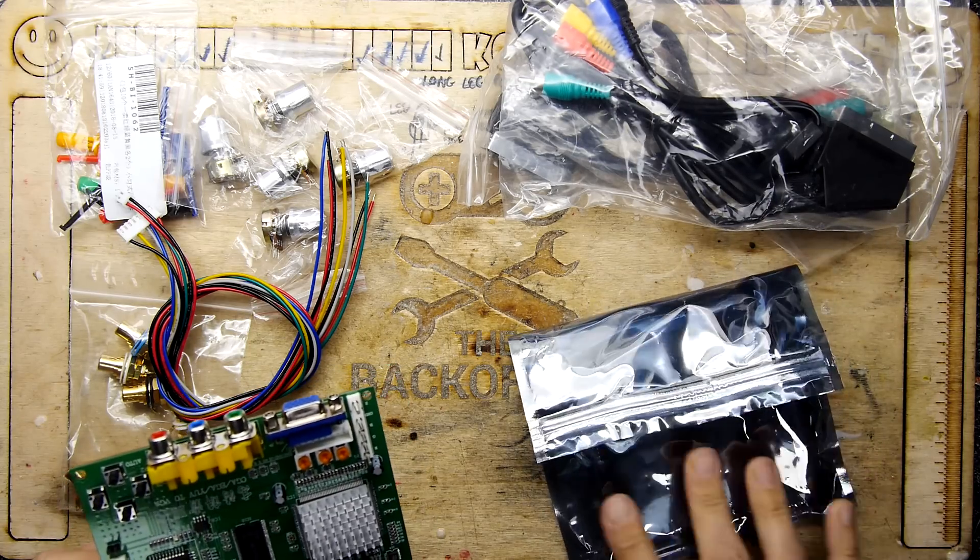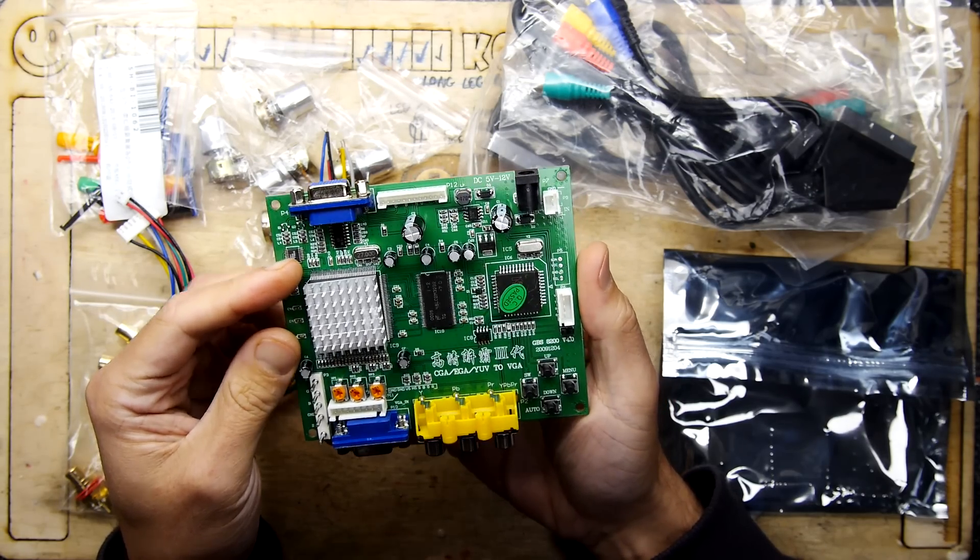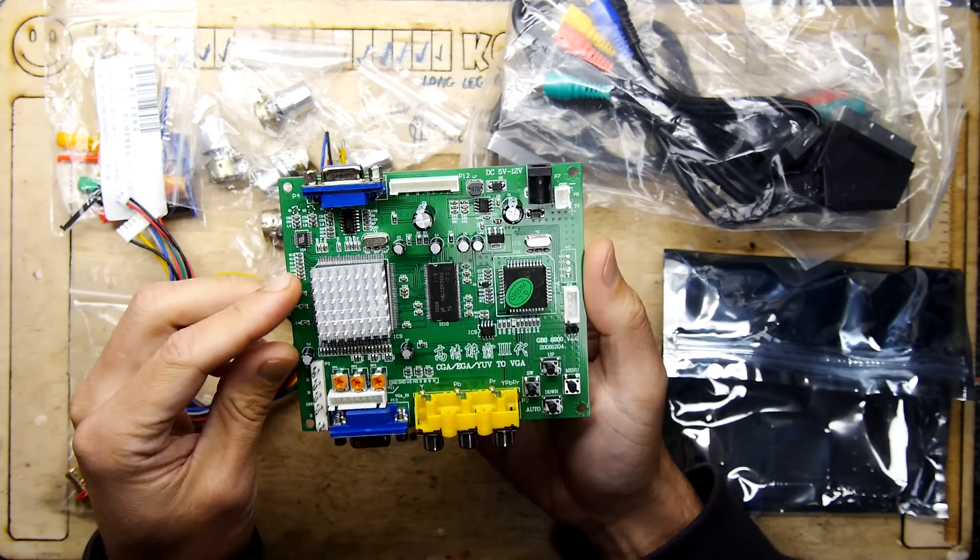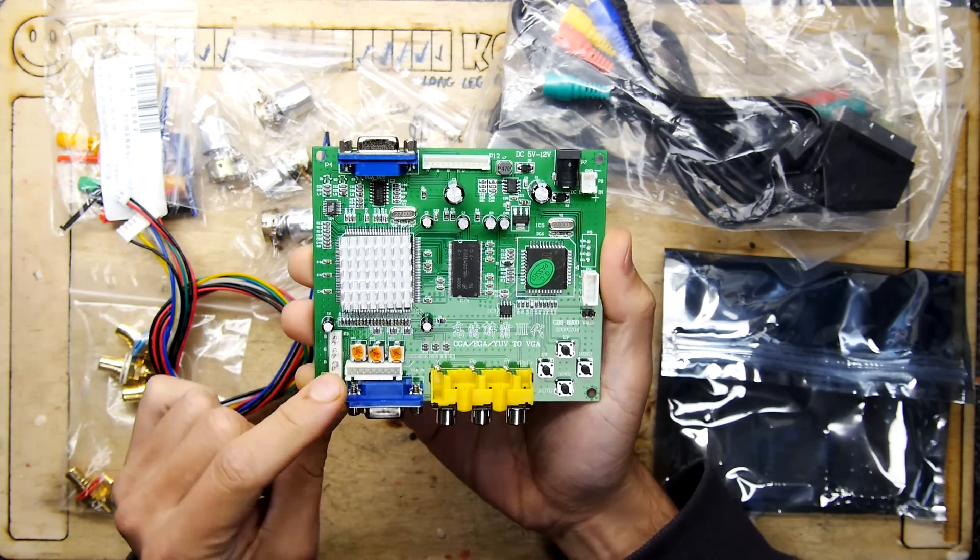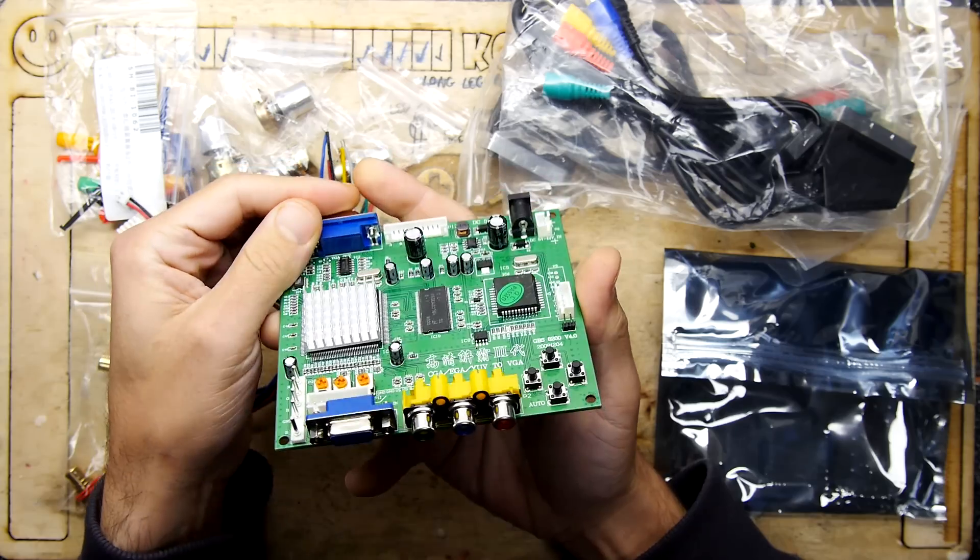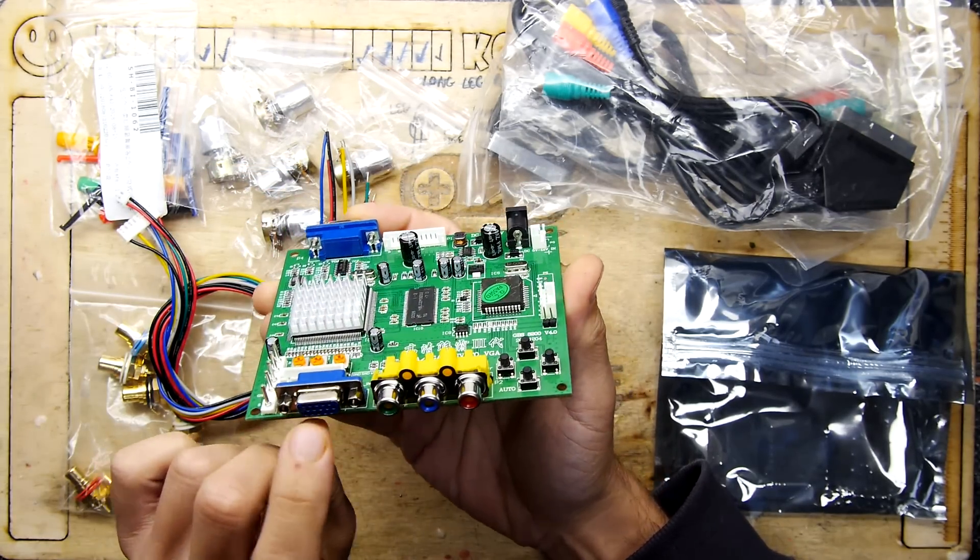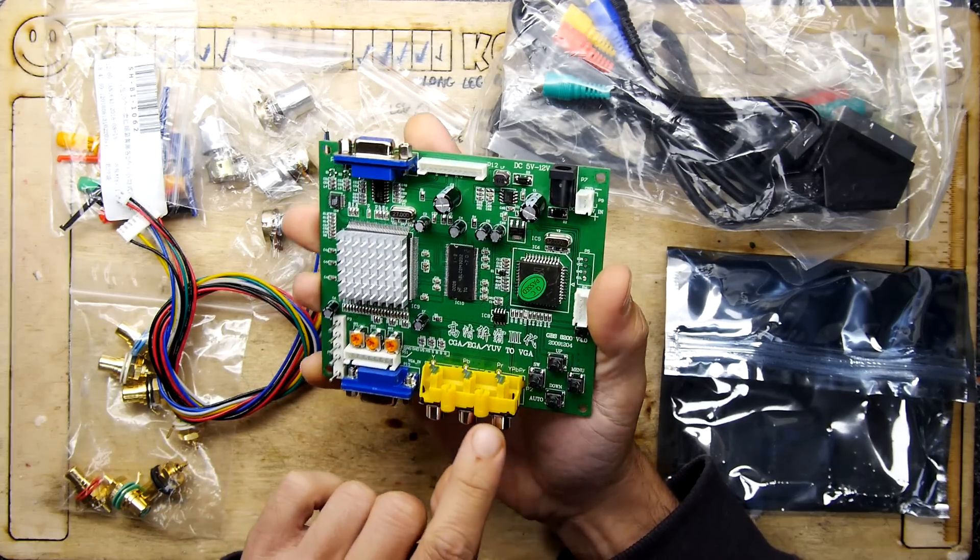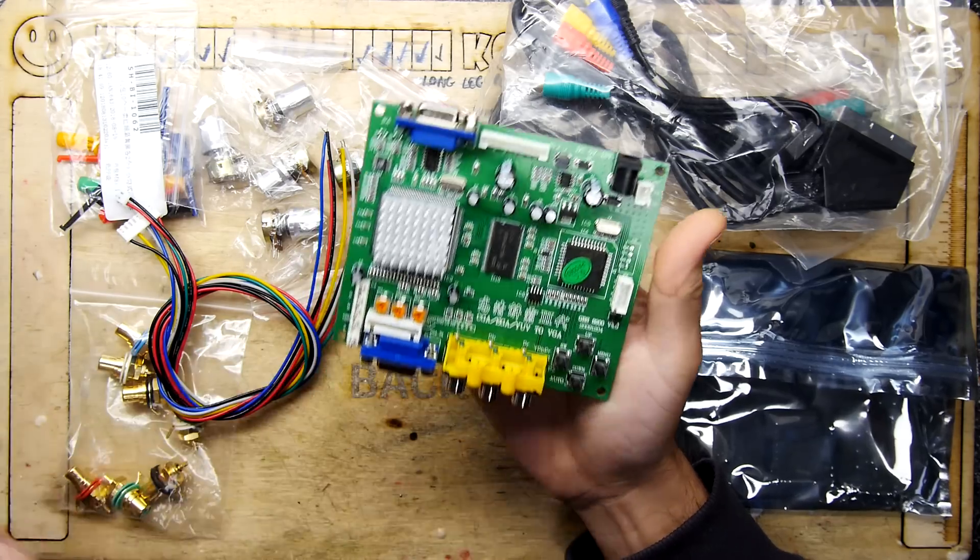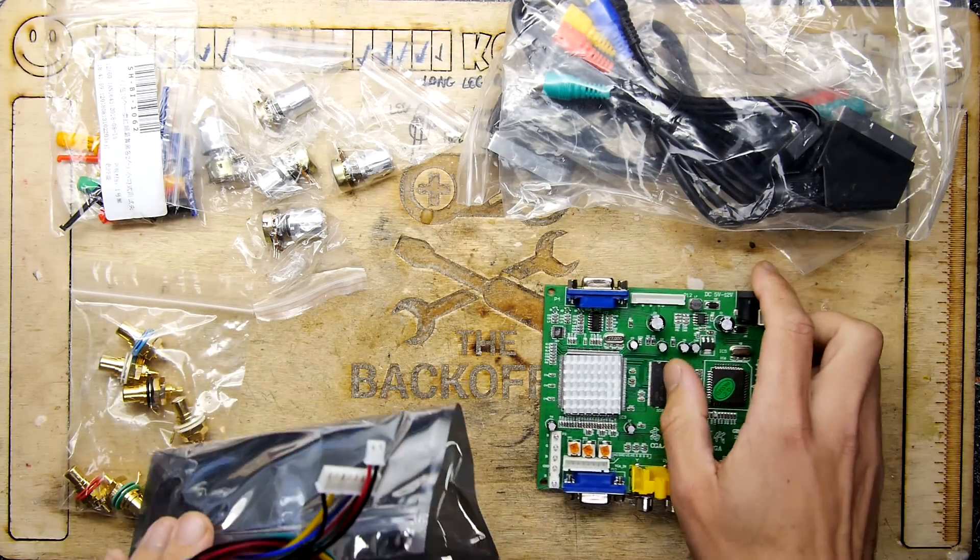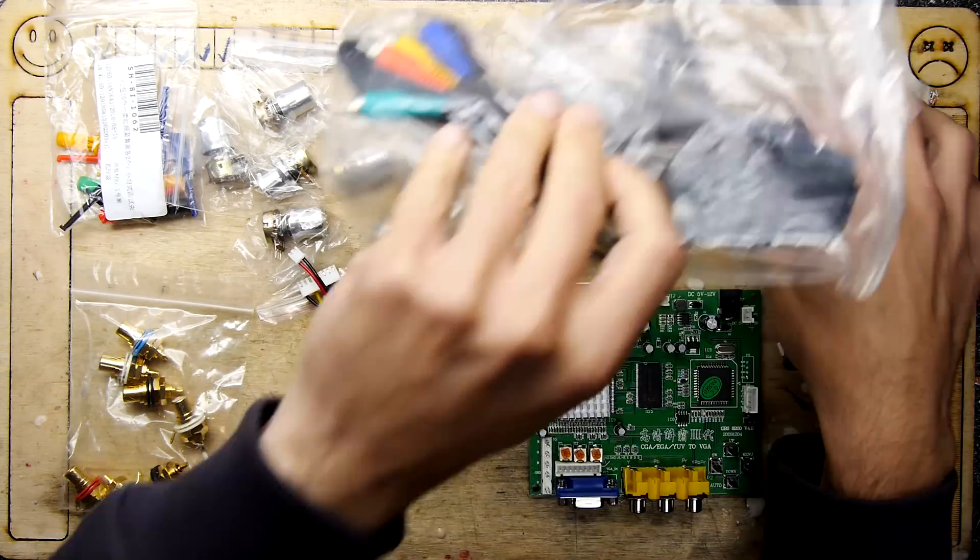And there you have the much maligned by me mainly, the GBS board. This is a version 4 and it takes an RGB input, RGB and sync input, and converts to VGA. That's basically its whole thing. It takes VGA in, and you can take component in on the panel. You should start to be getting an idea really of what this could be.